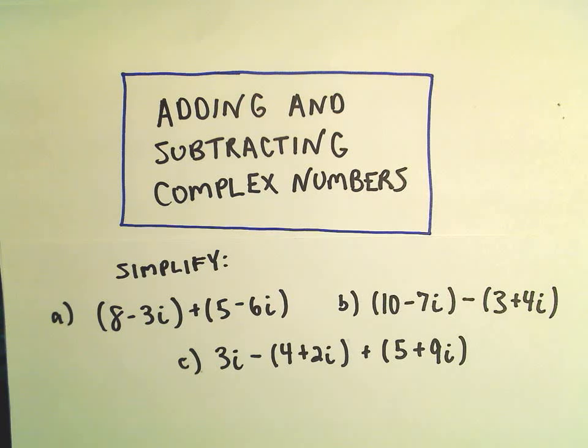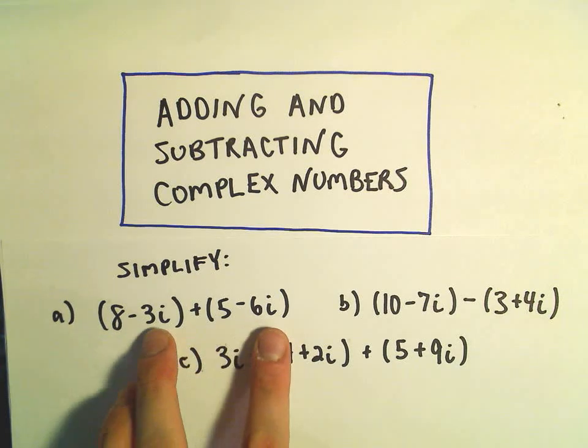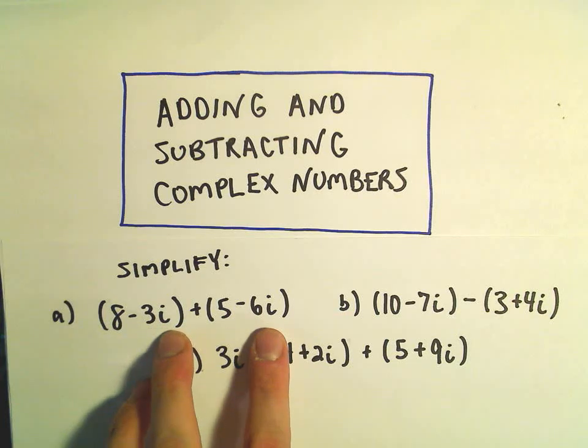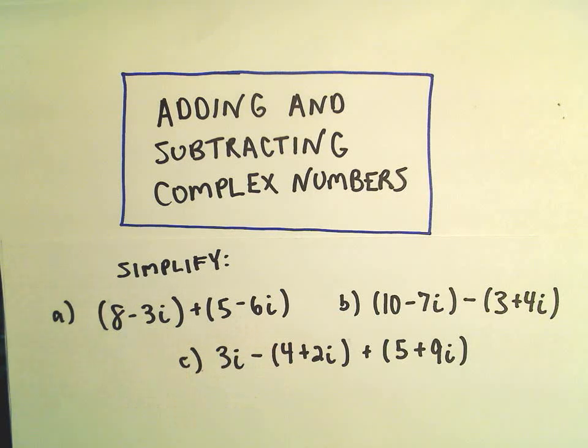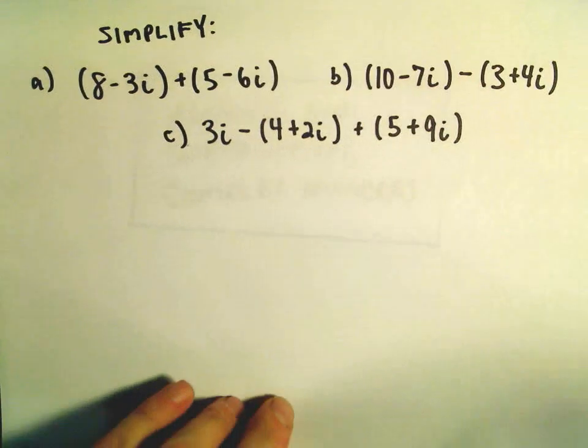Alright, in this video I just want to do some examples of adding and subtracting complex numbers. The idea is pretty straightforward when you're adding and subtracting complex numbers. You basically just, you can almost treat the i like a variable, you can think about it that way. It's definitely not a variable, but when you're adding and subtracting it kind of feels like one. So, what I mean is the following: